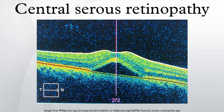An Amsler grid could be useful in documenting the precise area of the visual field involved. Causes: CSR is a fluid detachment of macular layers from their supporting tissue. This allows choroidal fluid to leak into the subretinal space. The buildup of fluid seems to occur because of small breaks in the retinal pigment epithelium.